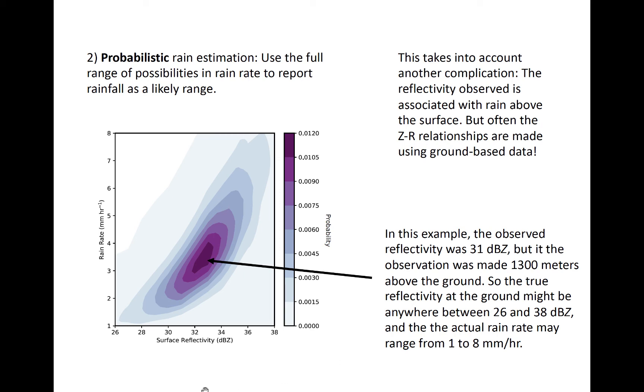Which given the distributions of rain rate we explored earlier, ends up corresponding to a potential rain rate between 1 and 8 millimeters per hour approximately.